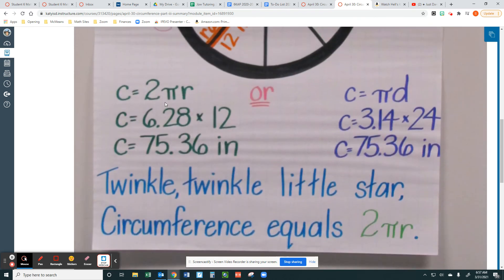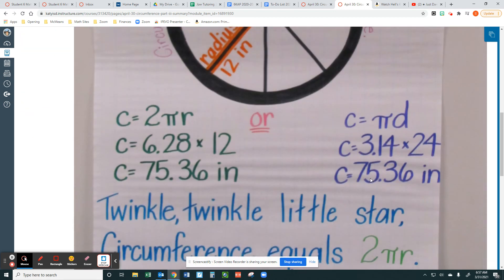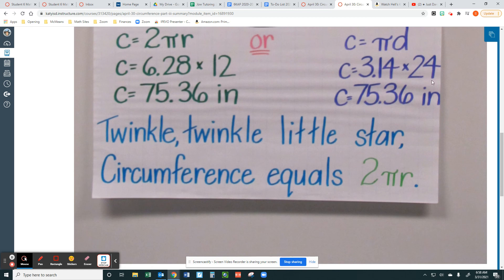To find the circumference or distance around, it's 3.14 of the diameters. So if you take the diameter 24 and wrap it around, it wraps around three times, plus a little more. So that's why it's 3.14 times 24, 75.36 inches. Or 2 pi R, if you know the radius, you do 2 times 3.14, 6.28, times 12. All right, that's it. All right, let's go.